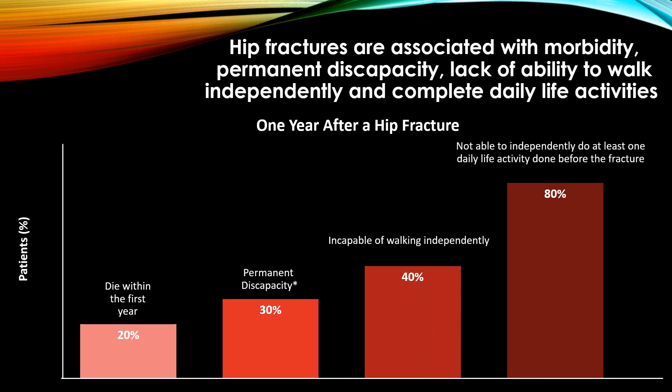The disease is not only about fracture. Hip fractures are associated with morbidity, permanent disability, loss of ability to walk independently, inability to perform daily life activities, and may even lead to death. After one year of a hip fracture: 80% will be unable to independently perform at least one daily activity they could do before the fracture; 40% will be incapable of walking independently and will need a walker, crutches, or wheelchair; and 30% will have permanent disability.